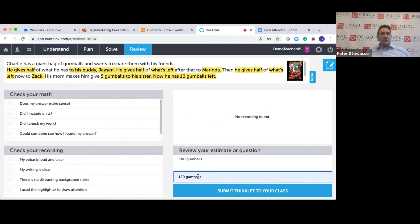Reminders. Did I include units? Did I check my work? That's something that we might not have done too well. Could someone see how I found my answer? And then with the recording, is my voice loud and clear? Is my writing clear? There's no distracting noise behind me. I used a highlighter to draw attention.